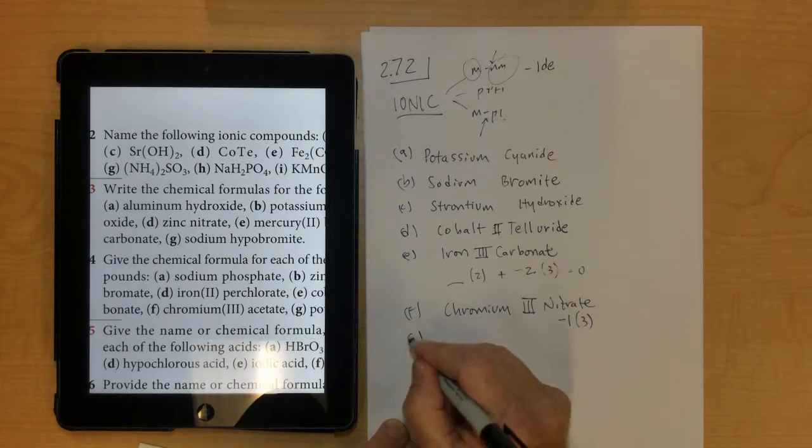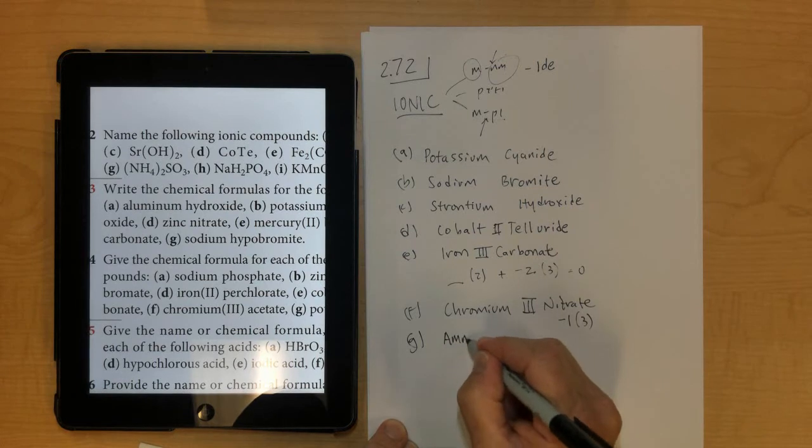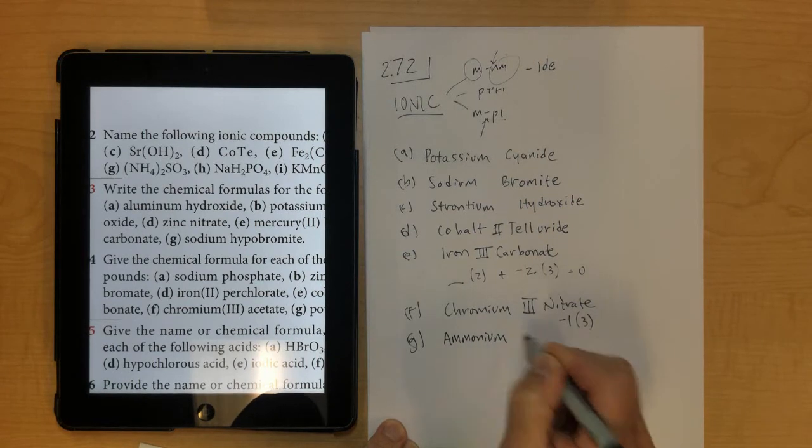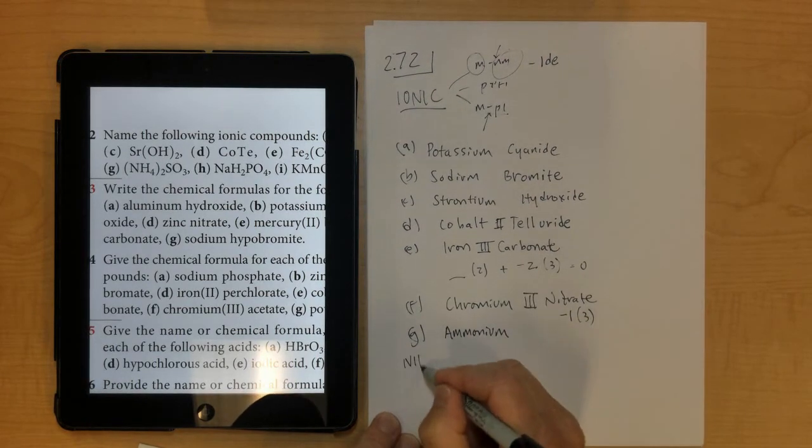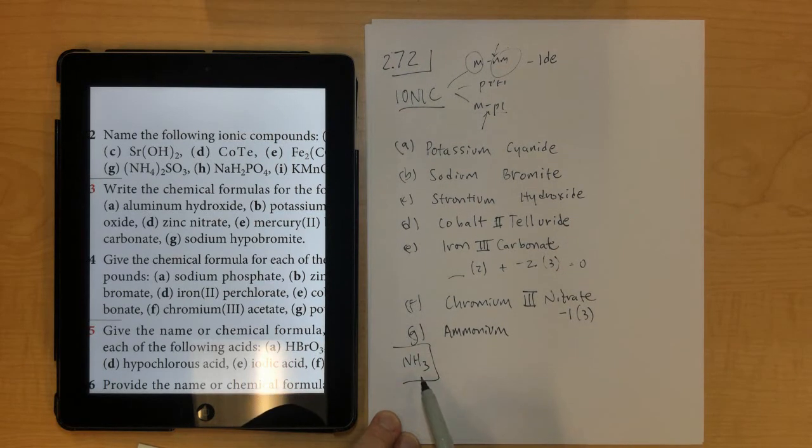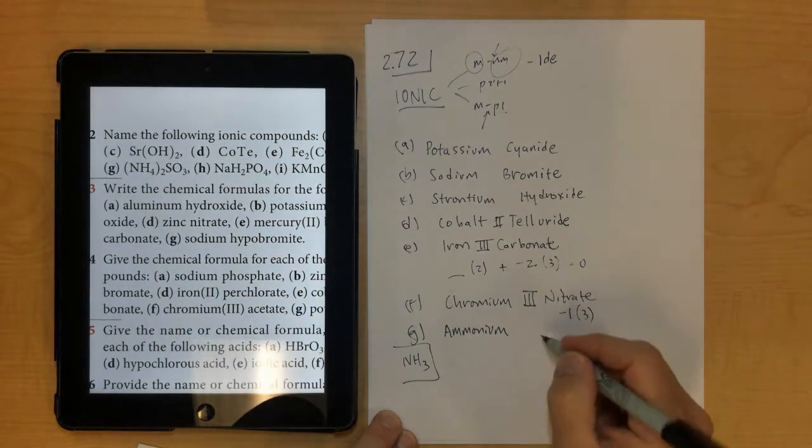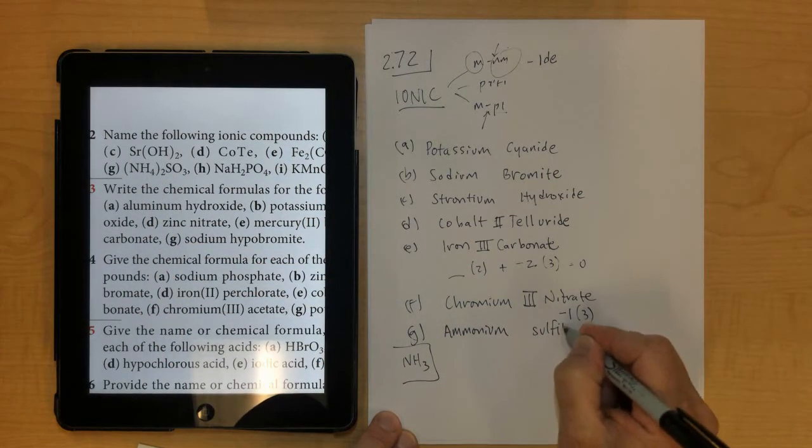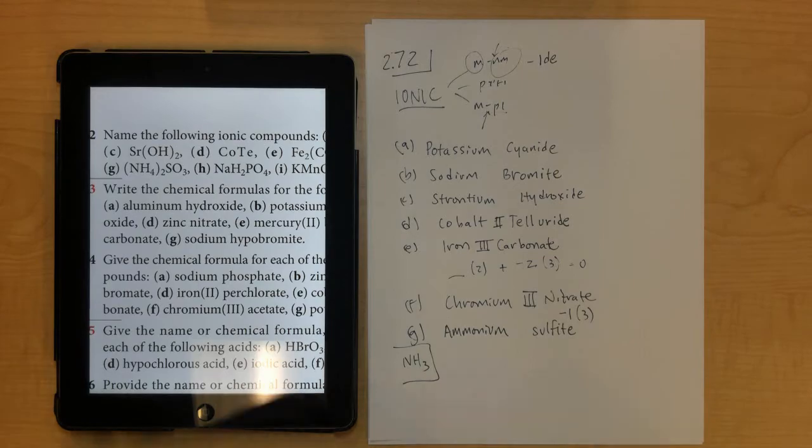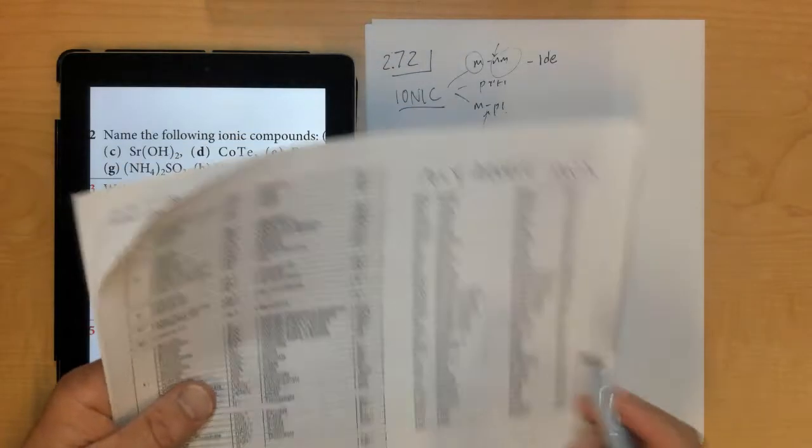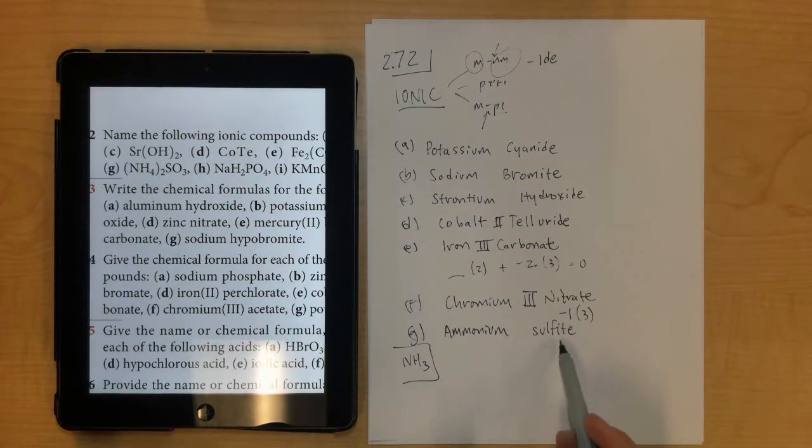Letter G, ammonium, is the polyatomic ion, as opposed to ammonia, which is a molecular compound, so this is ammonium ion, NH4, and then SO3 is sulfite, one you didn't necessarily have to memorize, which you can look up back here, and since this is a polyatomic ion and a polyatomic ion, you don't need a Roman numeral.